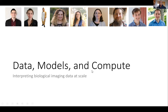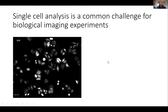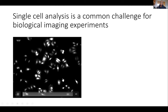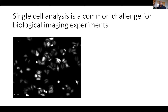This section is about data, models and compute, and it's really about interpreting biological imaging data with single-cell resolution at scale. Single cell analysis is a common challenge for biological imaging experiments. In our wet lab, folks do live cell imaging to try to understand how cells perceive both themselves and also their environment. In these experiments, you take cells, put in fluorescent reporters for different signaling pathways, put the cells on a microscope, collect images over time, and you'll get movies like this. The analysis that you have to do is identify every cell in every frame, link them together over time, and analyze either the location or the abundance of fluorescence over time.